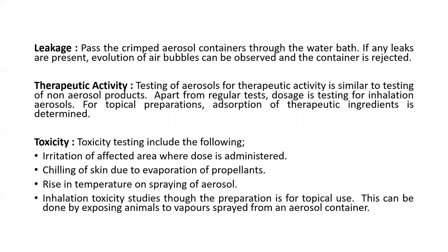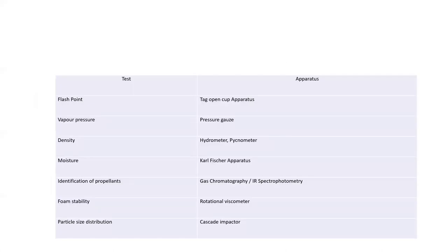Inhalation toxicity studies: even if the preparation is for topical use, this can be done by exposing animals to vapors sprayed from an aerosol container. As a conclusion, the evaluation tests of aerosols also include flash point, determined by a tag open cup apparatus; vapor pressure, determined with the help of a pressure gauge; density, by hydrometer or pycnometer; and moisture content with the help of the Karl Fischer rapid method.